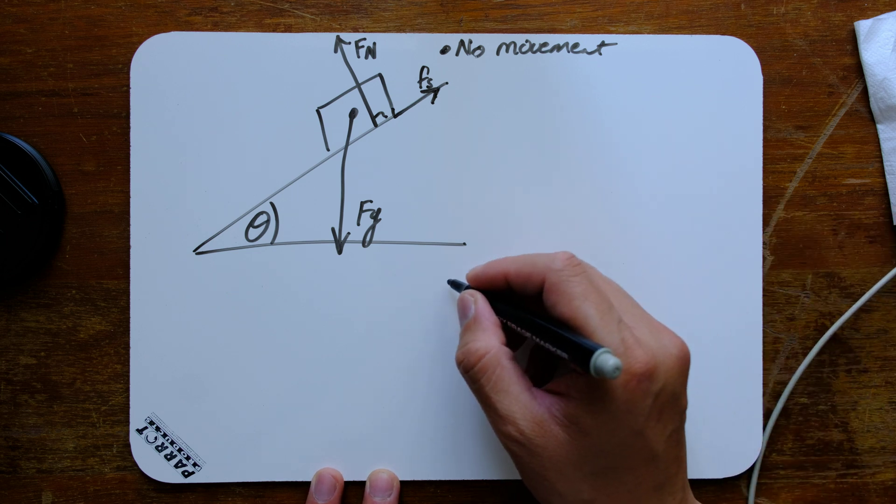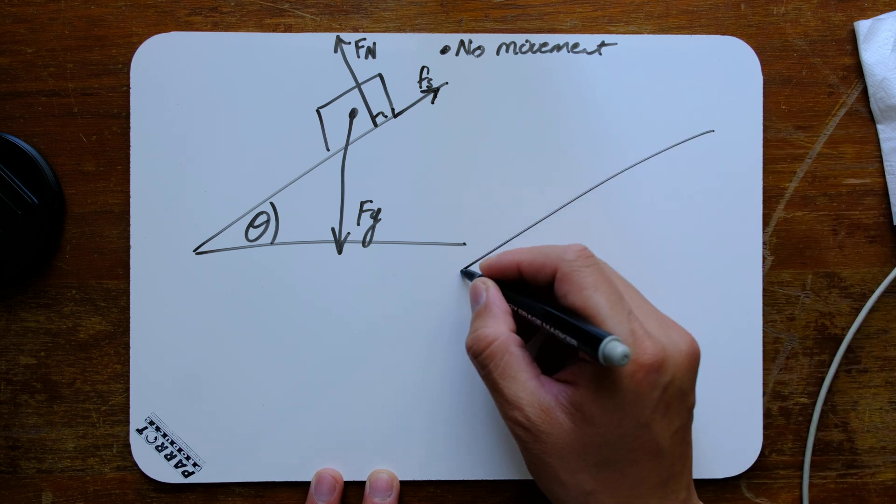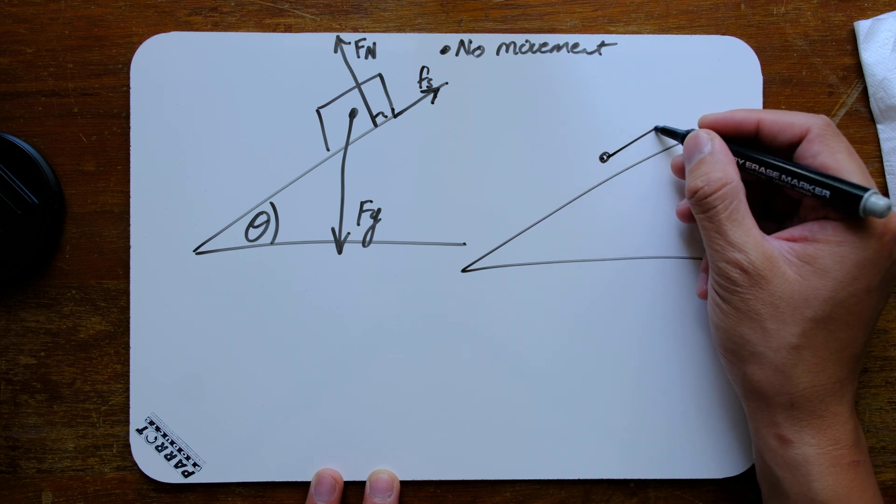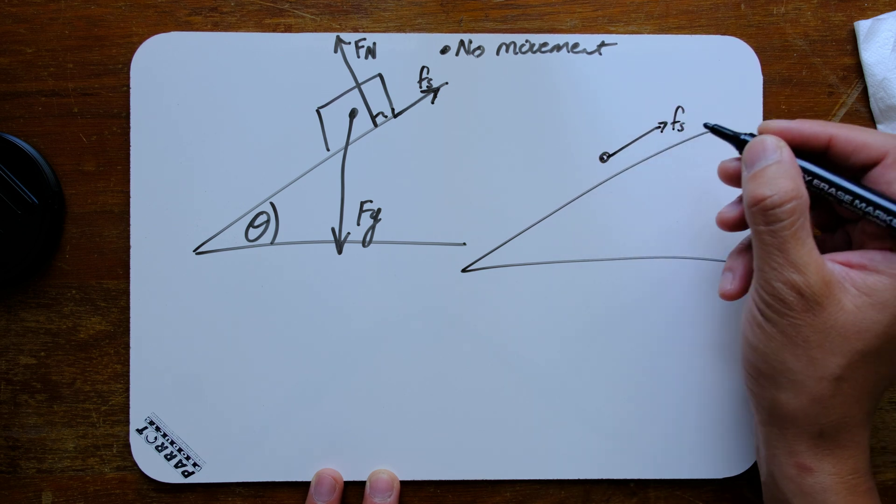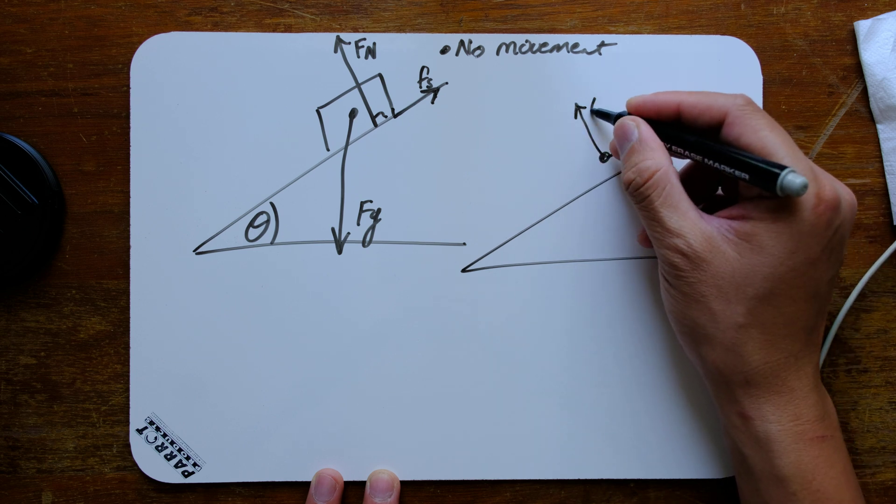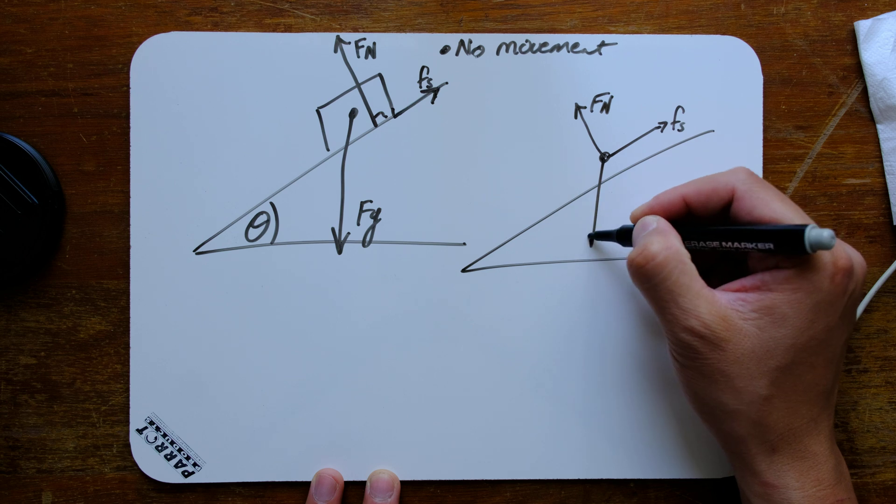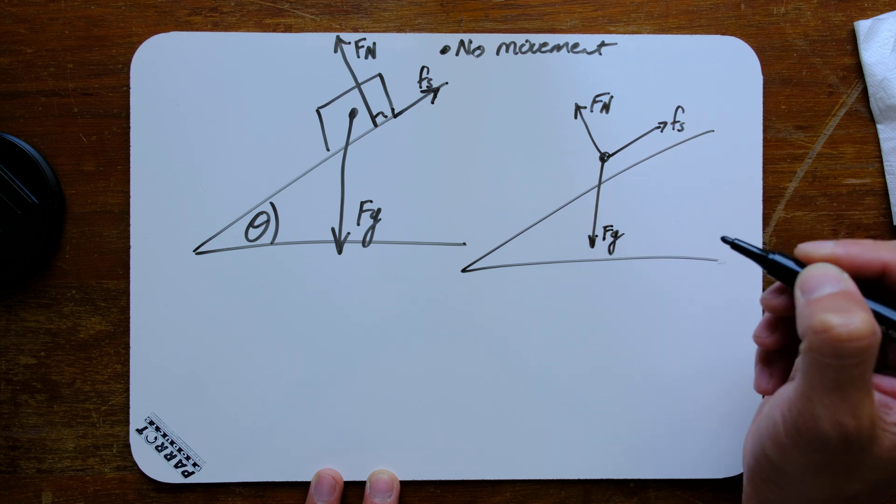Okay, now let's have a look at breaking this down into a free body diagram. So as a free body diagram, we have the force of friction going up, we have the normal force going perpendicular to the slope, and we have the force of gravity going down.